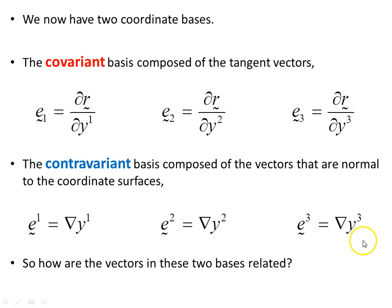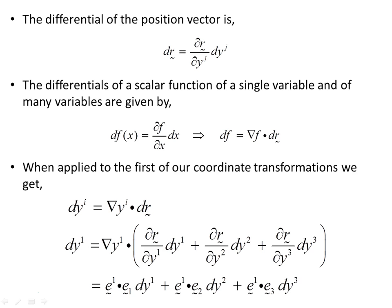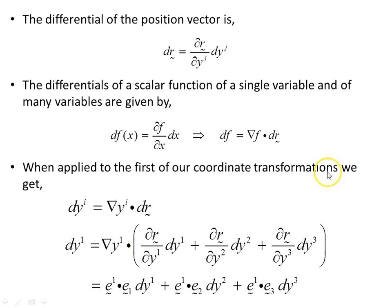Let's have a look at how these basis vectors are related to each other. The differential of the position vector is given by this expression — notice the derivative of the coordinate curves here. The differential of a scalar function of a single variable df(x) is (df/dx)dx, but for a function of many variables, the del operator comes into play. Applying this to our coordinate transformations, we get dy1 = del(y_i) · dr, where del(y1) is one of the contravariant basis vectors, and these are the individual tangent or covariant basis vectors.